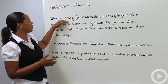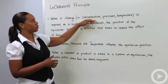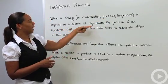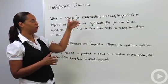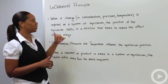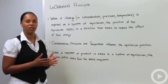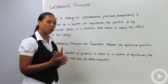Basically when you have a change in your system, be it in concentration, pressure, or temperature, when your system is at equilibrium and you impose these changes, then the position of the equilibrium is going to shift in a direction that tends to reduce the effect of that change. It's kind of like a push-pull kind of a thing.